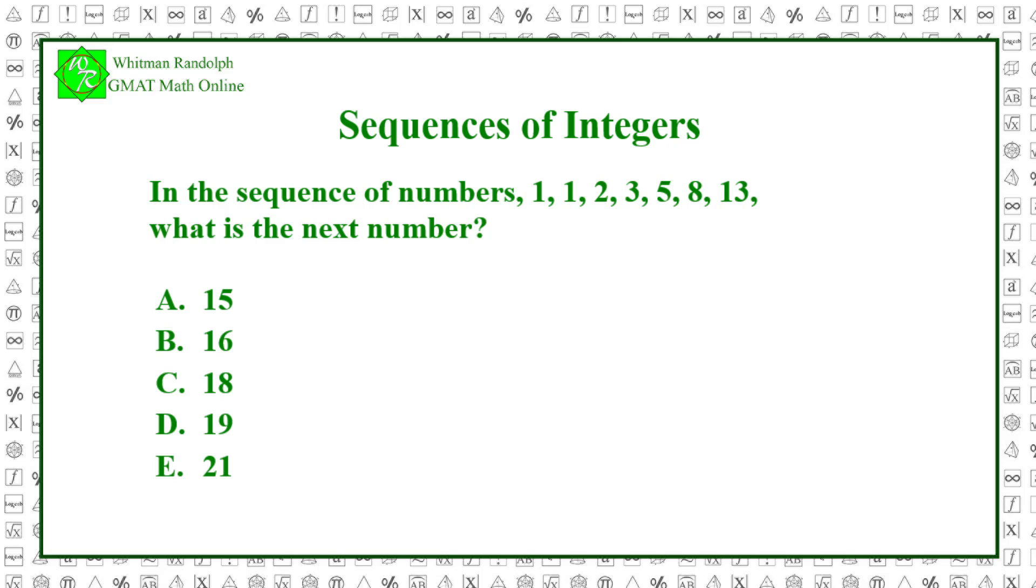Let's find the solution. This is the famous Fibonacci sequence. Each number in this sequence is the sum of the two previous numbers. So the next number will be 8 plus 13, or 21, and the correct answer is E.